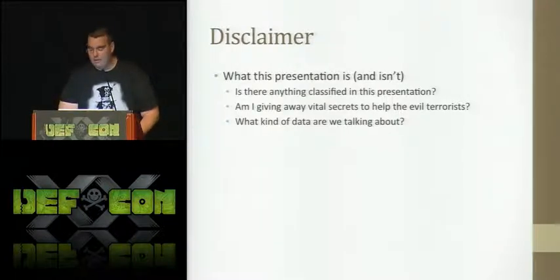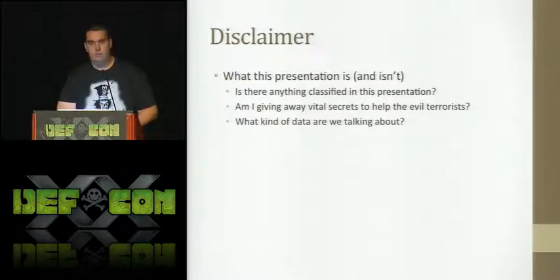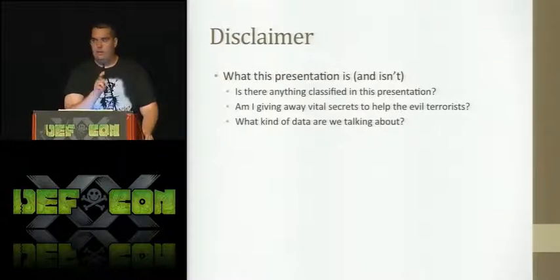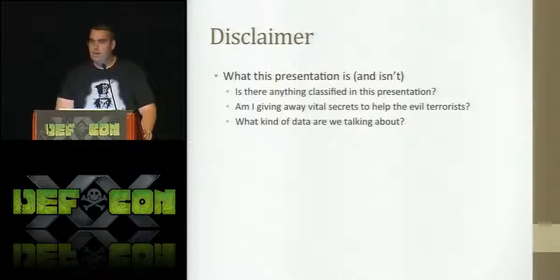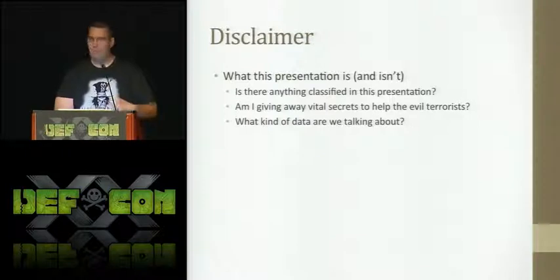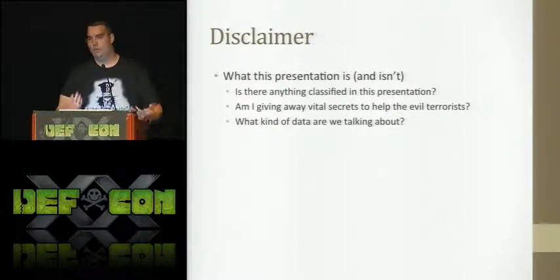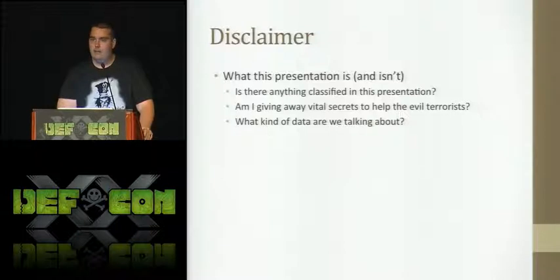I'm also not giving away any vital secrets to help the evil terrorists. The data we're talking about is purely collateral classified information. In the classified world there are three different types of classified information: collateral, which is basic confidential, secret, and top secret. There's also information called SAP — Special Access Program — like the stealth fighter program, things so super secret that only a small number of people know about them, sometimes exempt from even congressional oversight. The last type is SCI — Special Compartmentalized Information — mainly intelligence information under the oversight of the DNI.